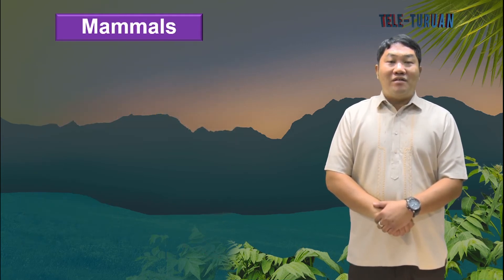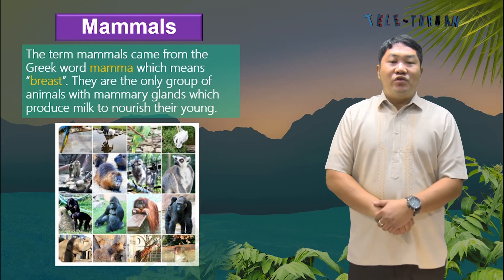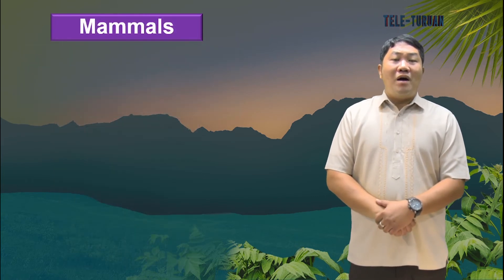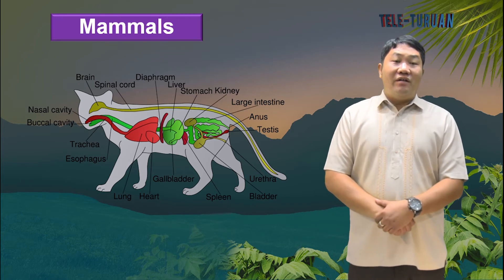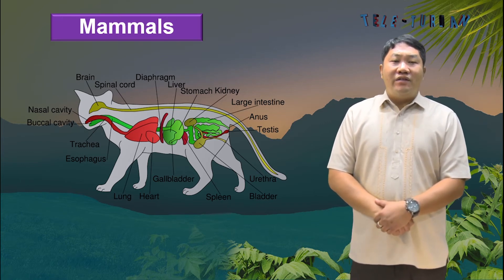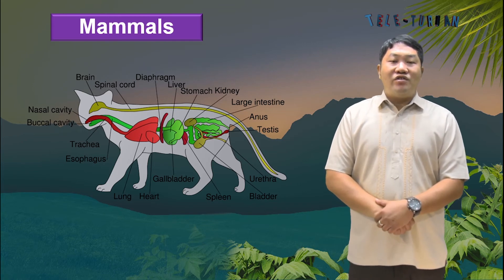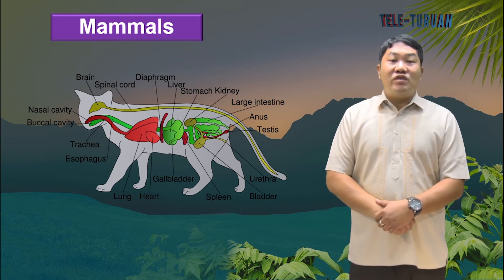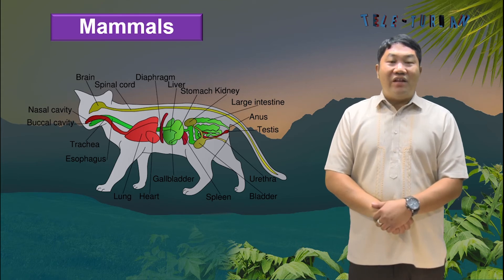Lastly, we have mammals. The term mammals came from the Greek word 'mamma' which means breast. They are the only group of animals with mammary glands, which produce milk to nourish their young. All mammals are warm-blooded and able to self-regulate their internal temperature. Their bodies are covered in fur or hair to serve as protection. They have more developed organ systems, including a heart with four chambers to efficiently circulate blood and a strong diaphragm for breathing. Most mammals have two sets of limbs used for movement and obtaining food. They also grow two sets of teeth — the first set being milk teeth, which are eventually replaced by permanent teeth.